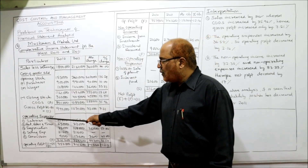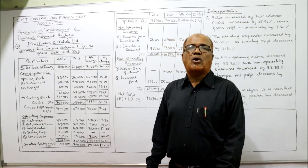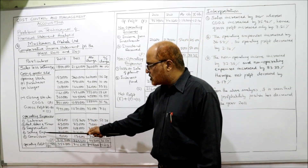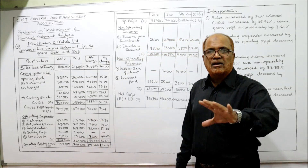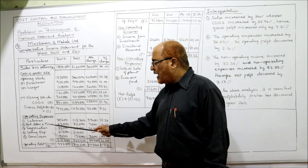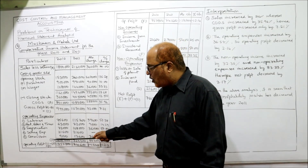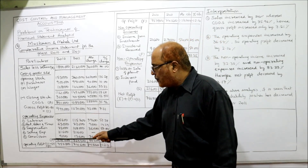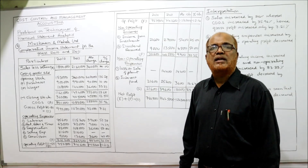Now identify the operating expenses — these are not directly labeled in the problem. From the debit side of the profit and loss account, salaries, rent and taxes, depreciation, selling expense, and commission are the operating expenses, denoted as D. Gross profit is C and operating expenses is D, so C minus D gives operating profit, denoted as E.